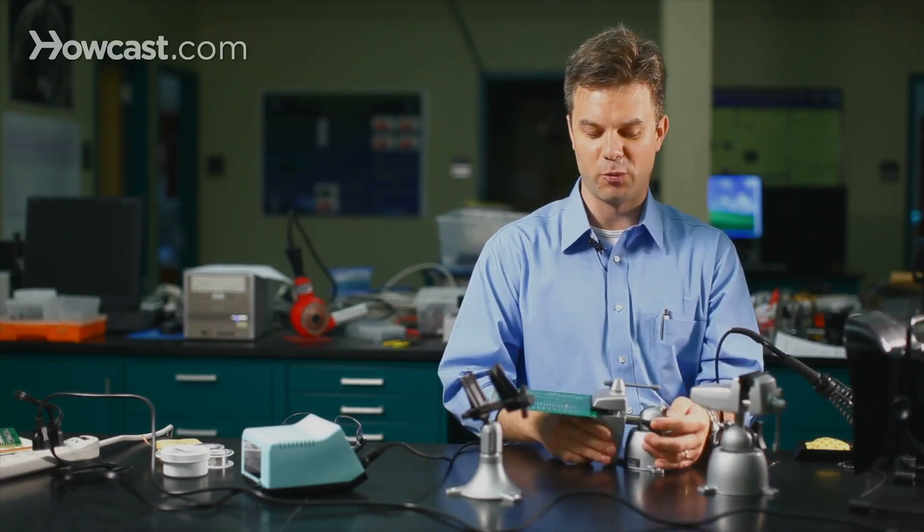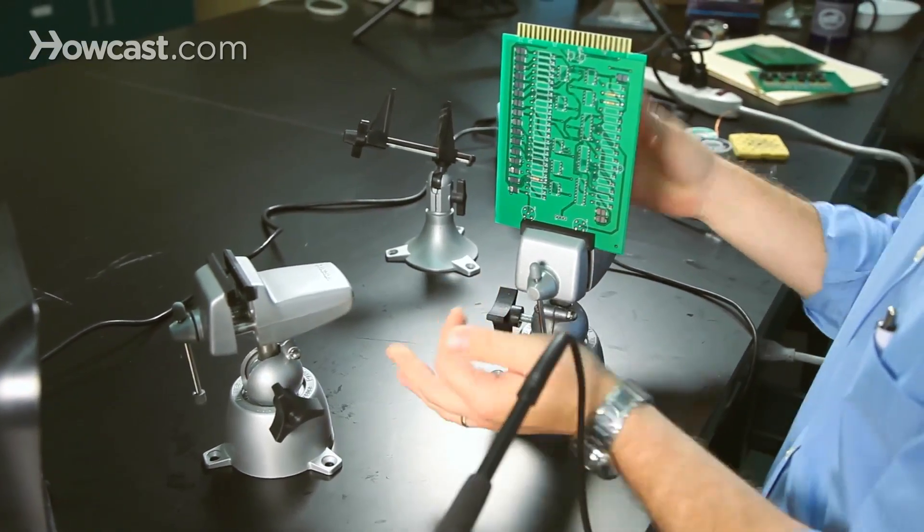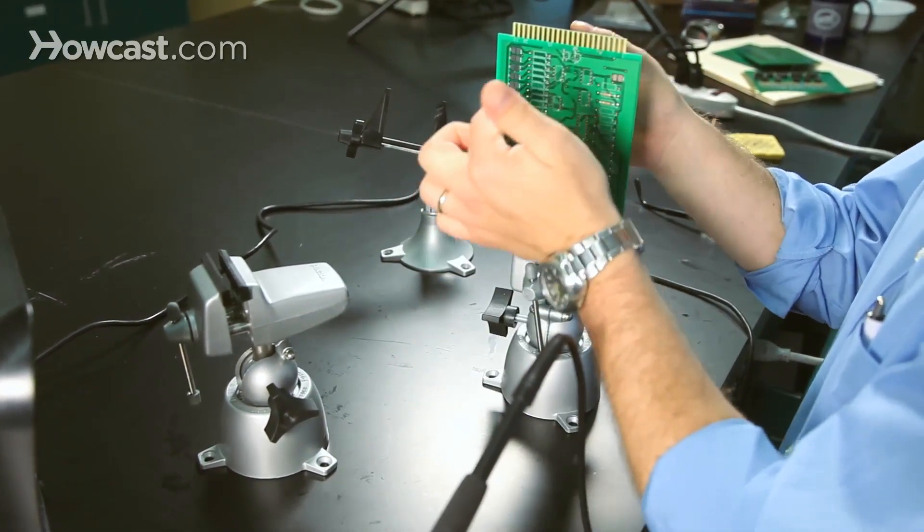For example, if we need access to both sides of the board, we can tilt the board up on edge and have access with both hands from either side.